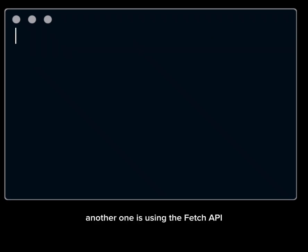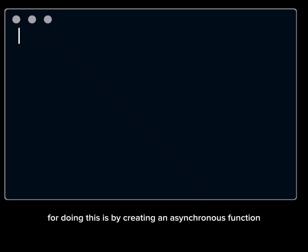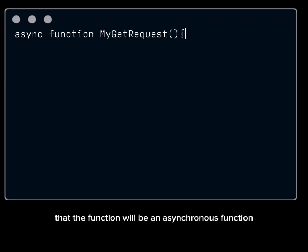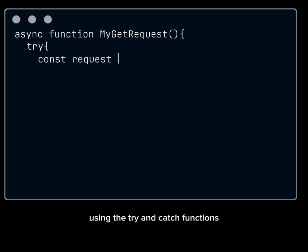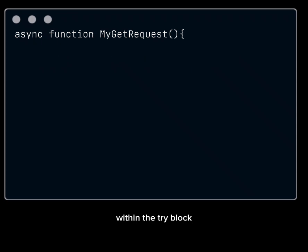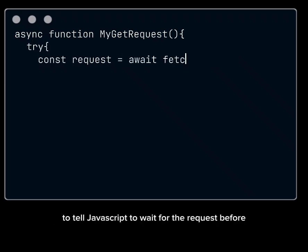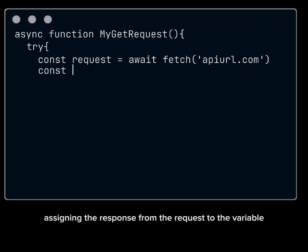Another one is using the Fetch API for GET requests. An ideal way to do this is by creating an asynchronous function — start by writing the async keyword before declaring the function. This tells JavaScript that the function will be asynchronous. Using try and catch for error handling, create a variable to make the GET request within the try block, adding the await keyword after the assignment operator to tell JavaScript to wait for the request before assigning the response to the variable.